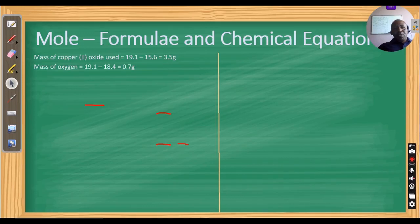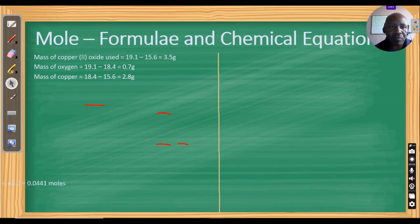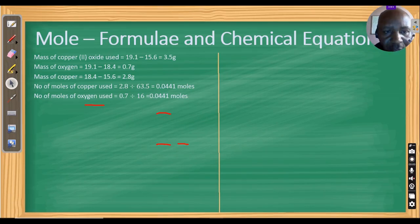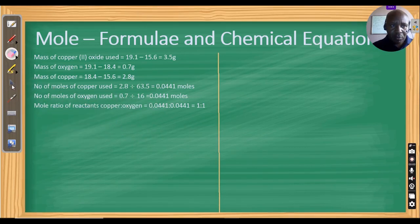The mass of oxygen reduced is 19.1 − 18.4 = 0.7 grams. The mass of copper remaining is 18.4 − 15.6 = 2.8 grams. Moles of copper = 2.8 ÷ 63.5 = 0.0441. Moles of oxygen = 0.7 ÷ 16 = 0.0441. The ratio is 1:1, confirming the empirical formula of copper oxide is CuO.